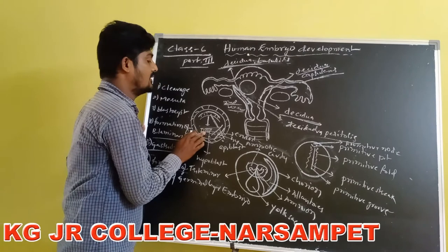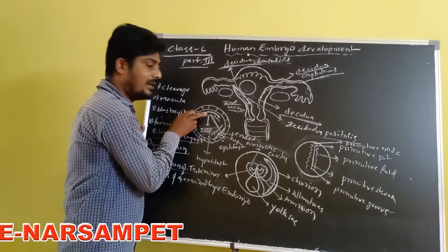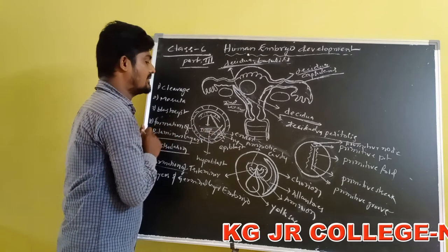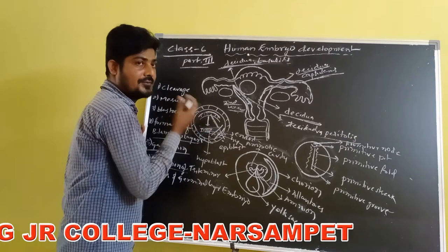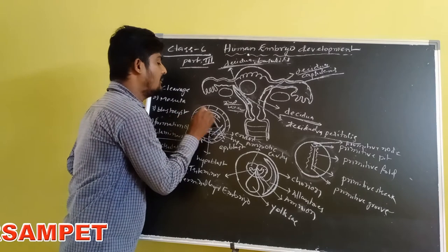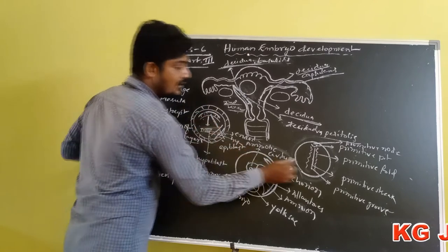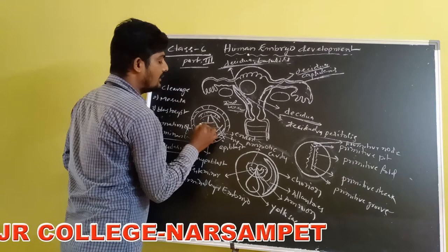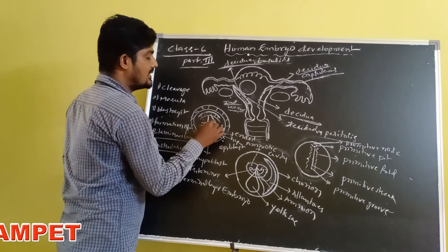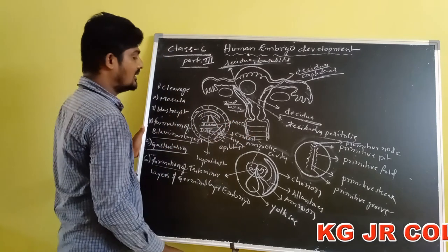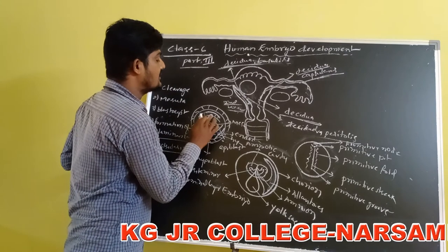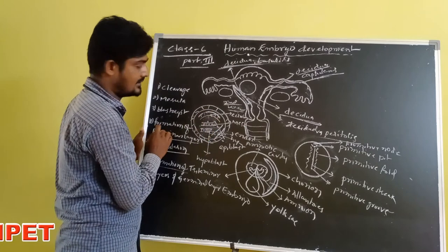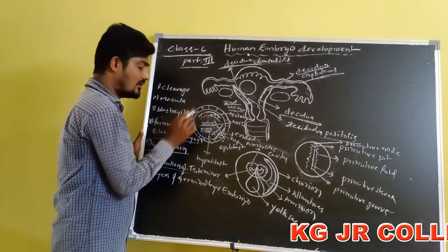The endoderm formation: some cells of epiblast are shed by the delamination process, move towards the epiblast, and form endoderm. Next, some cells of epiblast, which is the future mesoderm, are shed by the delamination process and convert to the primitive groove and invert through the primitive pit, forming another layer between the endoderm and the epiblast. This layer is called mesoderm.